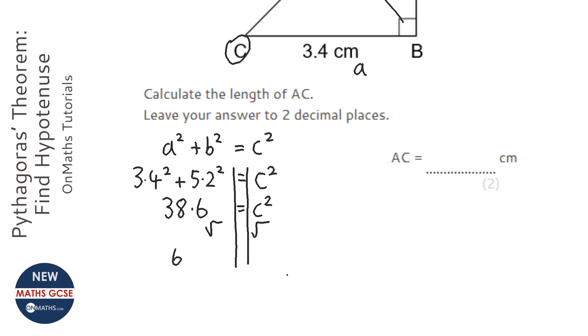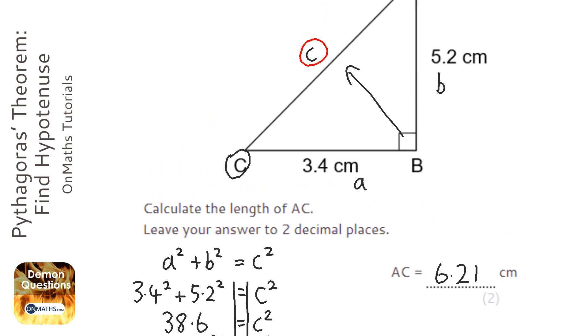And that's 6.21. So AC, which I labeled as c, is 6.21. Now you can check your answer briefly. The hypotenuse must be the longest side, so that has to be longer than 5.2 and 3.4, which it is.